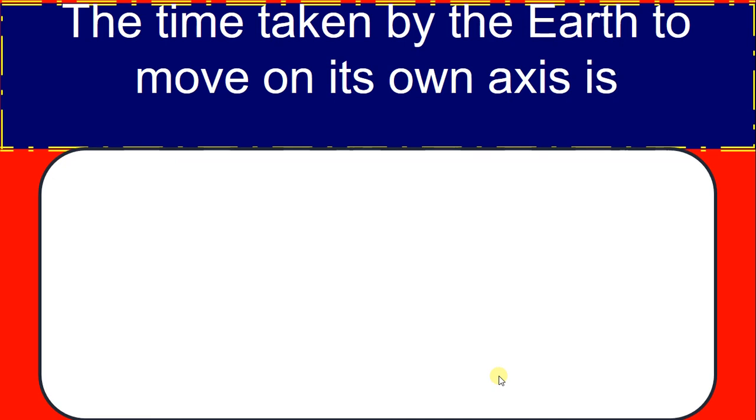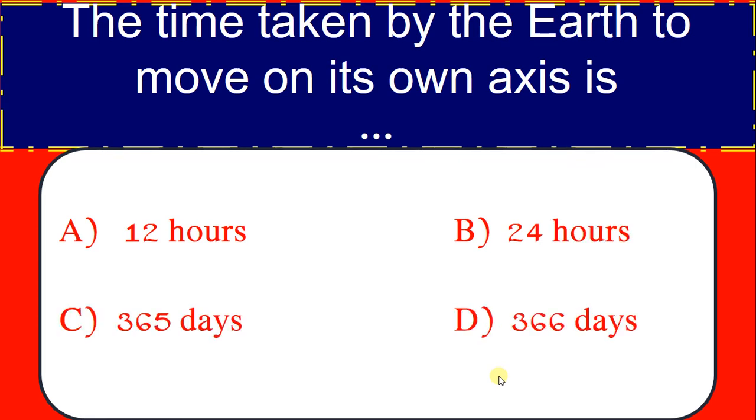The time taken by the Earth to move on its own axis is. 12 hours, 24 hours, 365 days, 366 days. Correct answer, 24 hours.